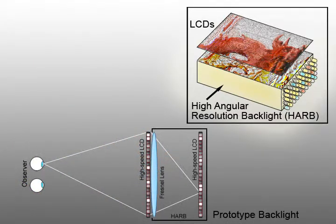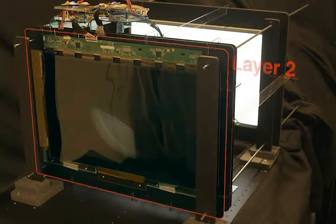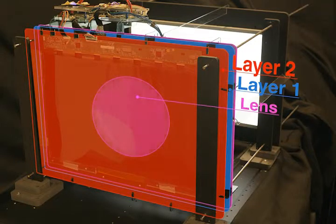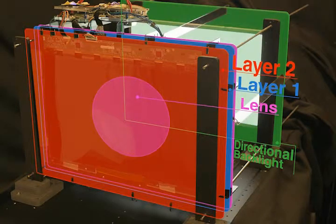For our prototype display, we constructed a HAR backlight using a single large Fresnel lens and a high-speed LCD display behind a front LCD, as shown at bottom. We constructed a prototype display consisting of two modified LCD panels, a Fresnel lens, and an additional monitor. The rear monitor and lens emulate a thin HAR backlight in this prototype.